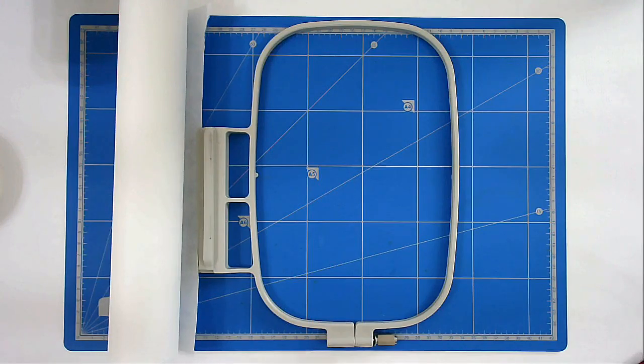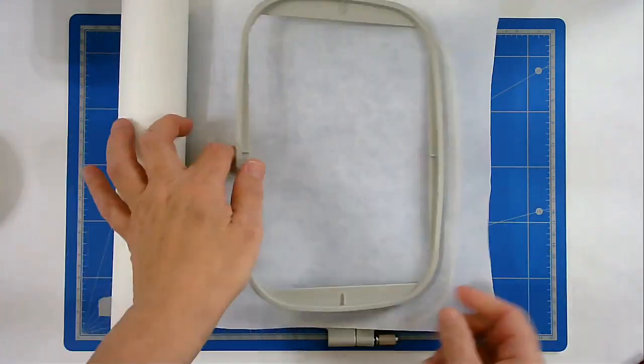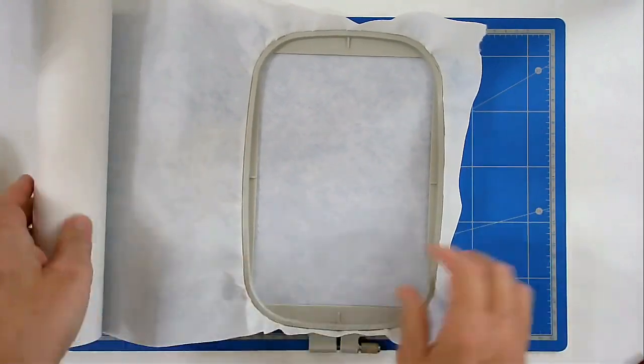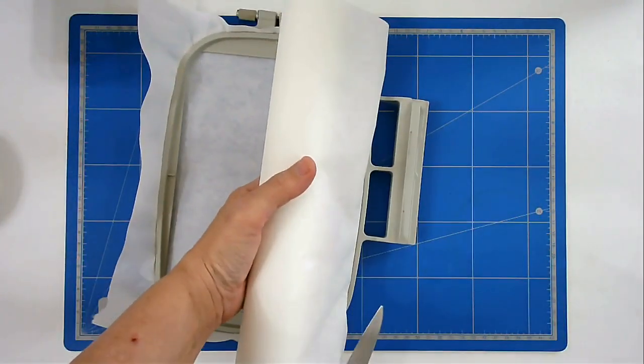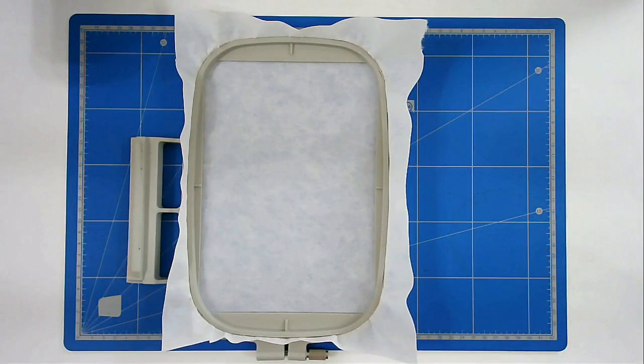I'm going to start off by hooping my cutaway stabilizer. I'm now going to pop this into my machine and stitch round number one which is going to give me my outline.